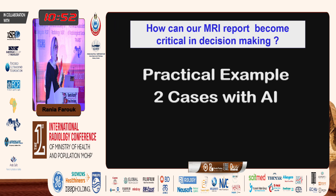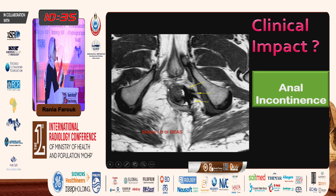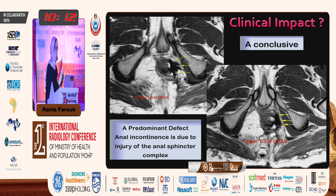I'll give two practical examples of patients with anal incontinence. In these images, this is the anal sphincter complex. On the normal side you see the internal anal sphincter, while on the left side there is hypointense deformation indicating severe scarring. These patients need surgical repair and physiotherapy. This is what you deliver to your surgeon — a conclusive MR report showing the predominant defect of anal incontinence is due to injury of the anal sphincter.